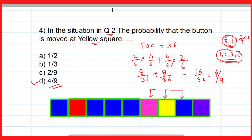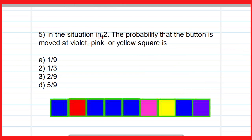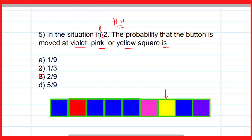Now let us move to the next question. In the situation of question 2, the button is placed at the yellow square and the die is thrown twice. The probability that the button is moved to either the violet, pink, or yellow square — this question is left as homework for you. Let me know in the comment box whether option A, B, C, or D is the correct option.